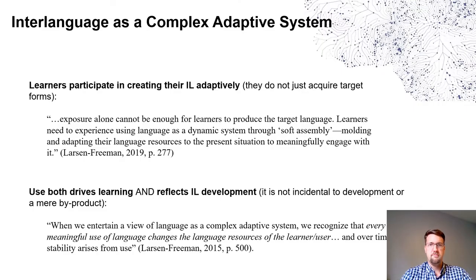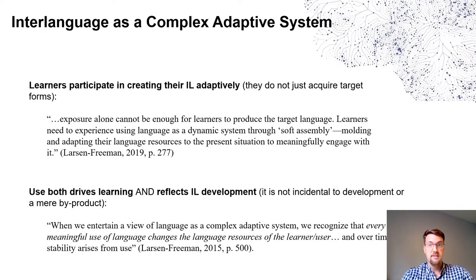There are two important tenets to keep in mind when framing interlanguage development as a complex adaptive system. The first is that learners are active participants in creating their interlanguage, whether through interaction with an interlocutor, the environment, or a task. Larson-Freeman reminds us that learners need to experience using language as a dynamic system, molding and adapting their language resources to the present situation. What is implicit in seeing interlanguage as a complex adaptive system is that use drives learning, and use reflects subsequent development. Larson-Freeman cautions that every meaningful use changes the language resources of the learner or user.